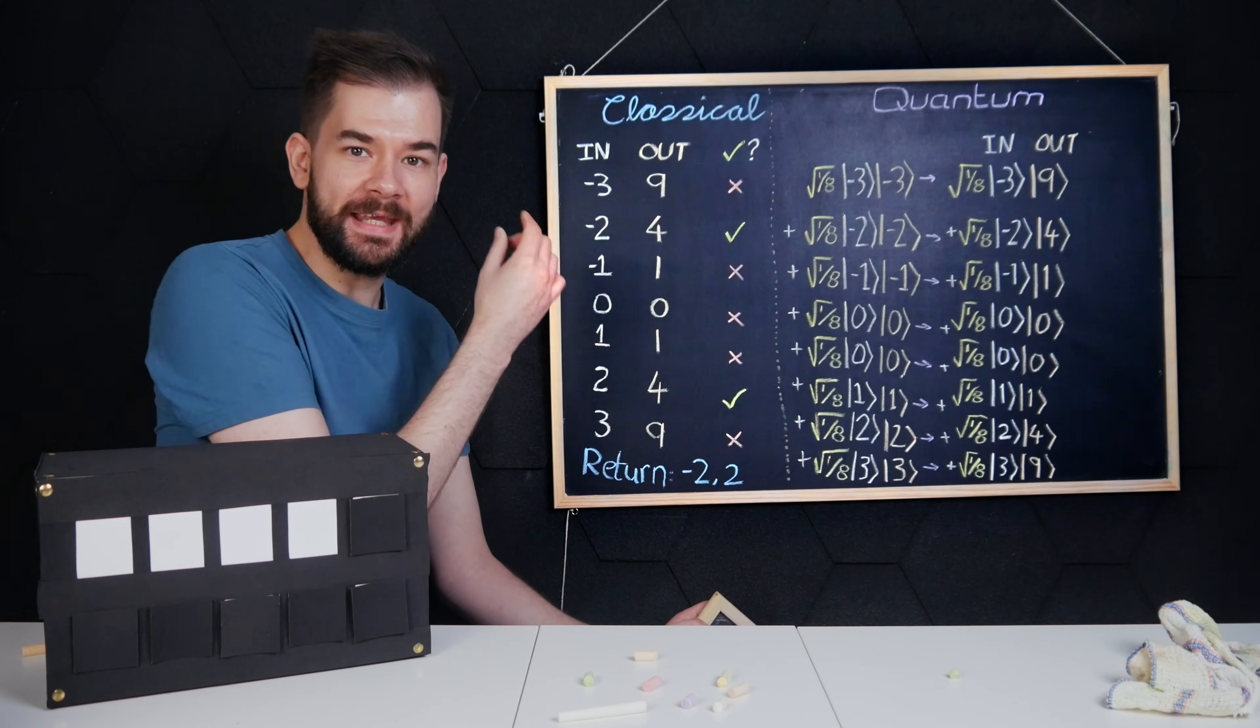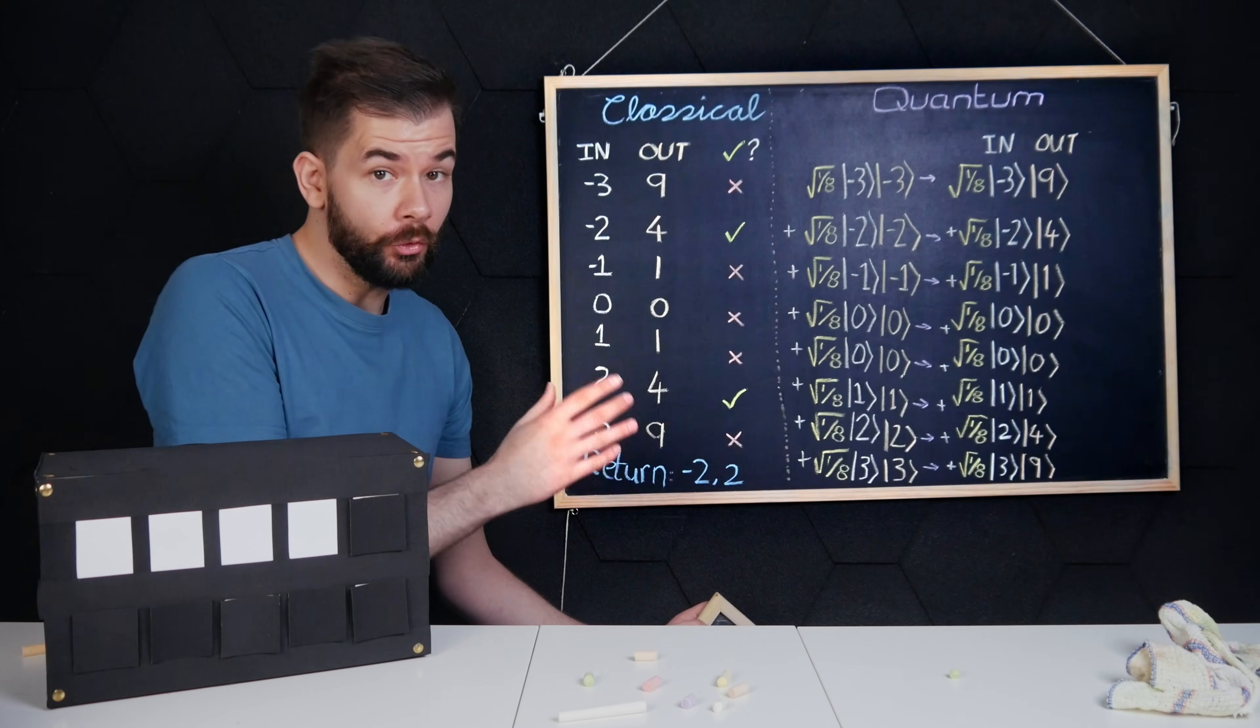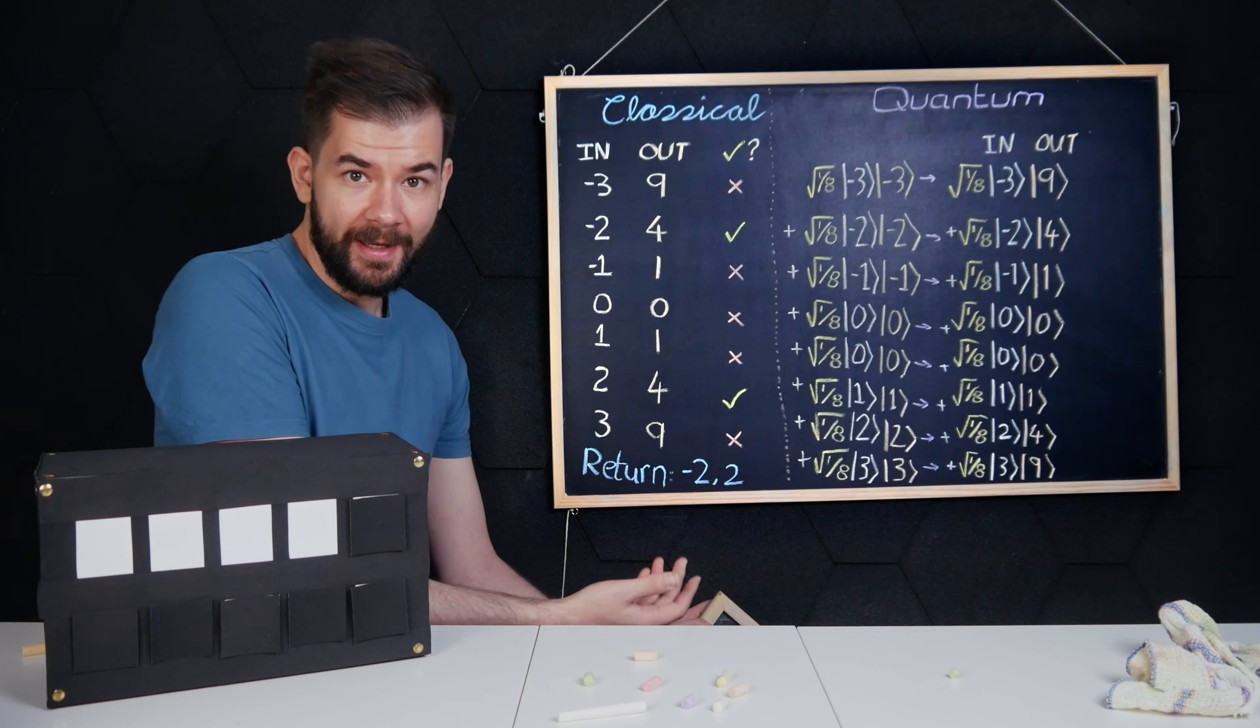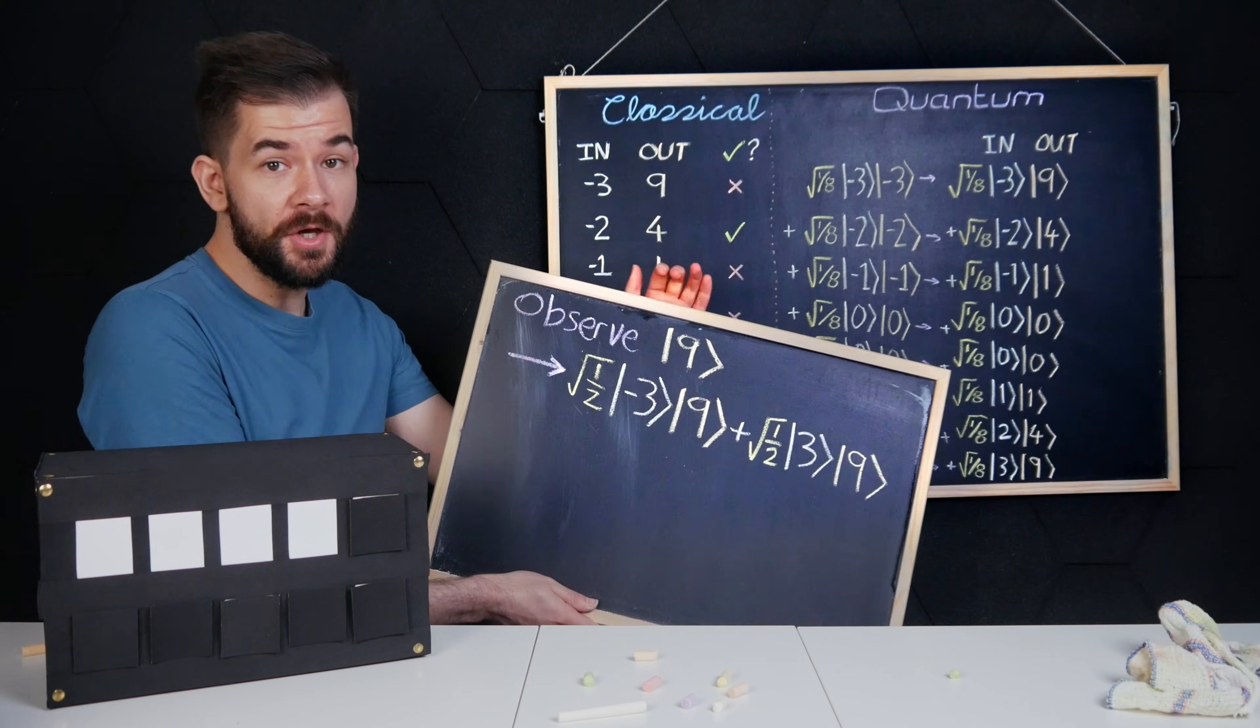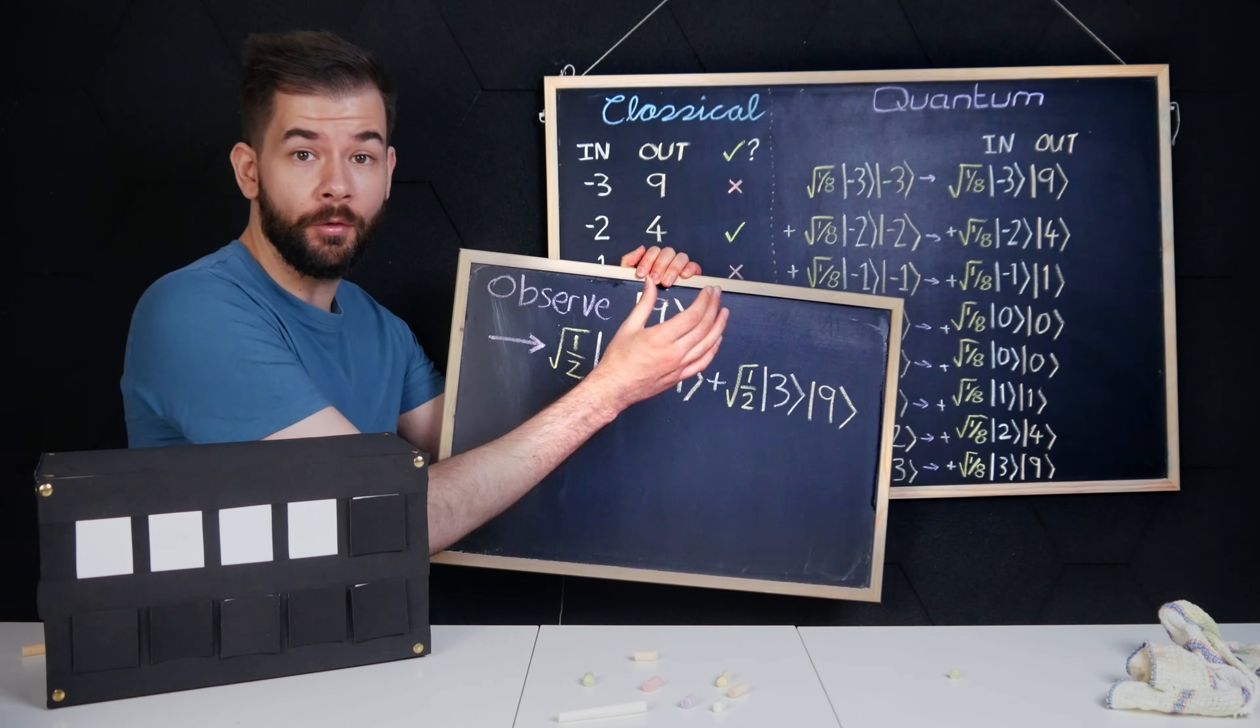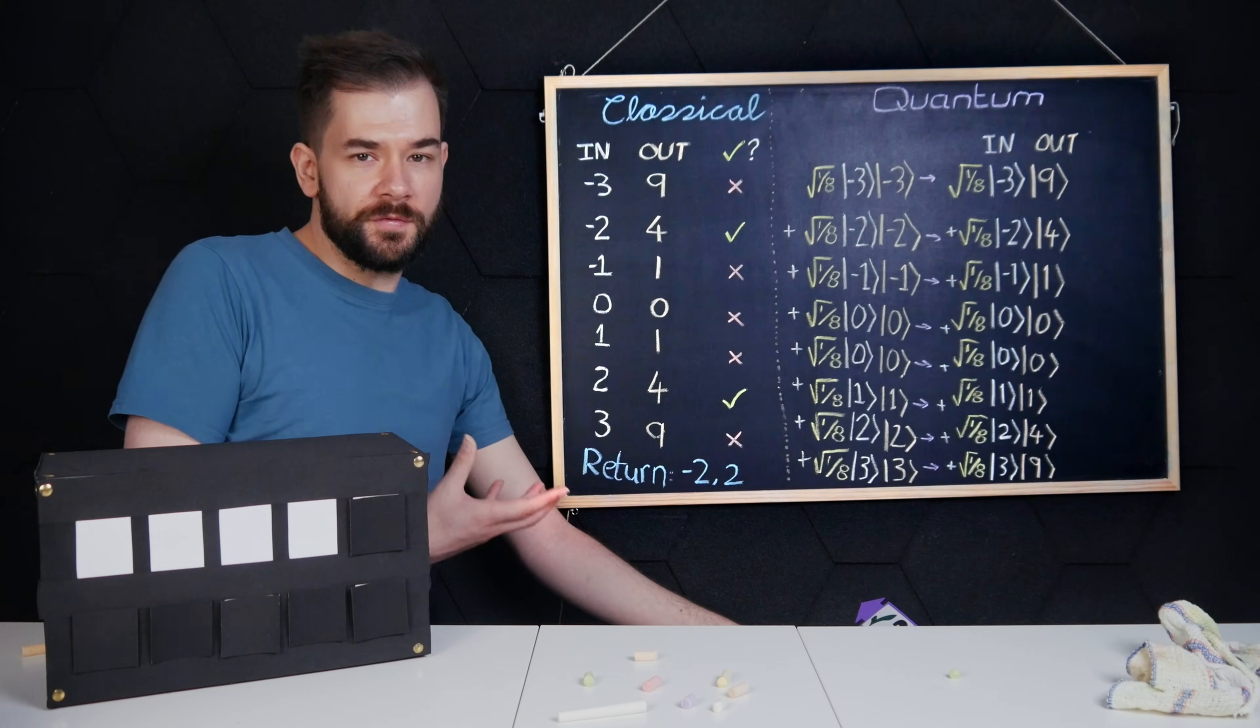Notice that there are only four outcomes, all equally likely. So let's say I measure a nine there. Now I know that my first set of qubits are definitely either set to minus three or three without even having to look. How do we use this?